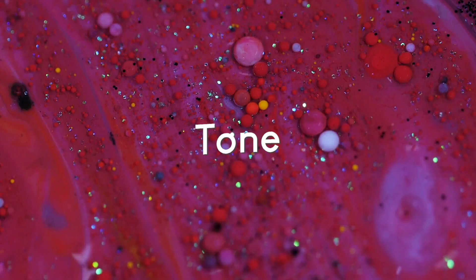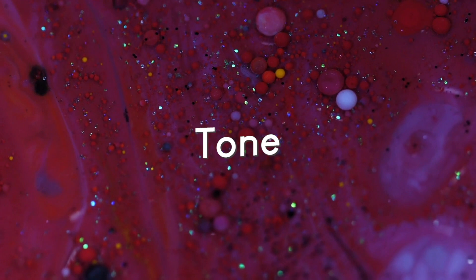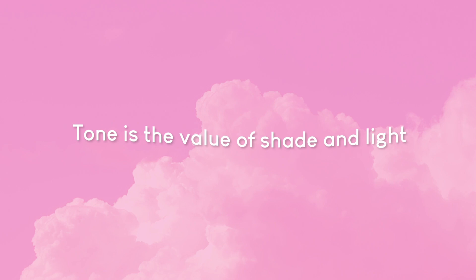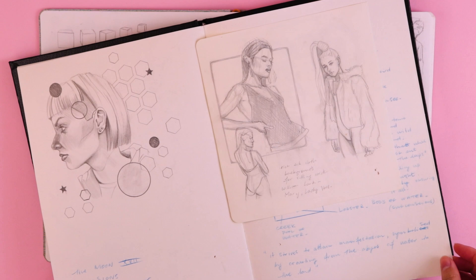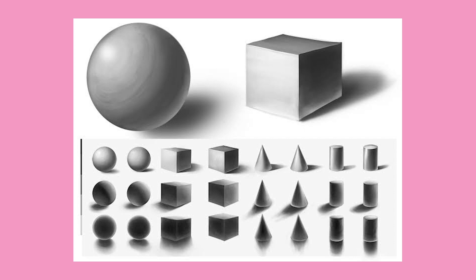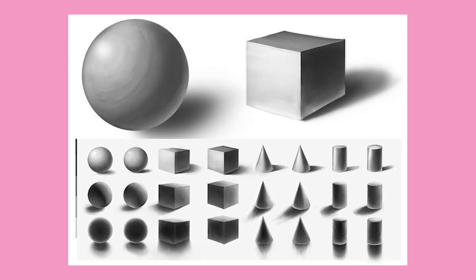Now that we've covered form, let's chat about tone. Tone is the value of shade and light — the lightness or darkness of a color. Tone helps create dimension and helps the eye assess what an image is. Much like form, the human eye needs help to define a shape, and tone can enhance it. Tone and form work very cohesively together to give the illusion of three-dimensionality.